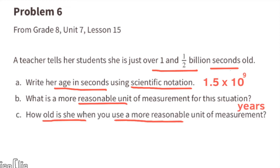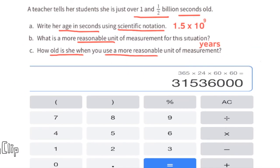C: How old is she when you use a more reasonable unit of measurement like years? I used a calculator. 365 days in a year times 24 hours in a day times 60 minutes in an hour times 60 seconds in a minute.